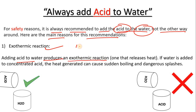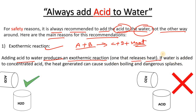What is the meaning of exothermic reaction? Simply, if there is component A plus B as reactants, when they react they produce C plus D plus heat — it releases heat. Now if water is added to concentrated acid, the heat generated can cause sudden boiling and dangerous splashes.